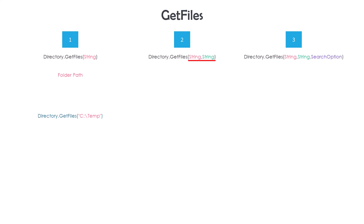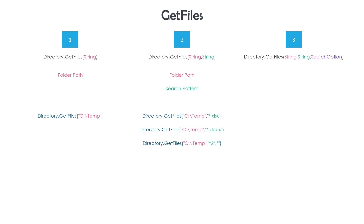The second overload has two parameters. The first is also the folder path. The second is a search pattern to specify which files you want to get from the directory — for example, to get only Excel files, or Word files, or only files that have the number 2 in the name. The search pattern consists of two parts with a dot between them: the first part is for the name of the file and the second part is for the extension. Setting an asterisk instead of the name means you want any file regardless of name, and the same applies for the extension.